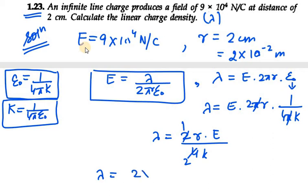...r in this case is 2 × 10^-2, E in this case is 9 × 10^4, over 2, then we have k value, so k = 9 × 10^9.